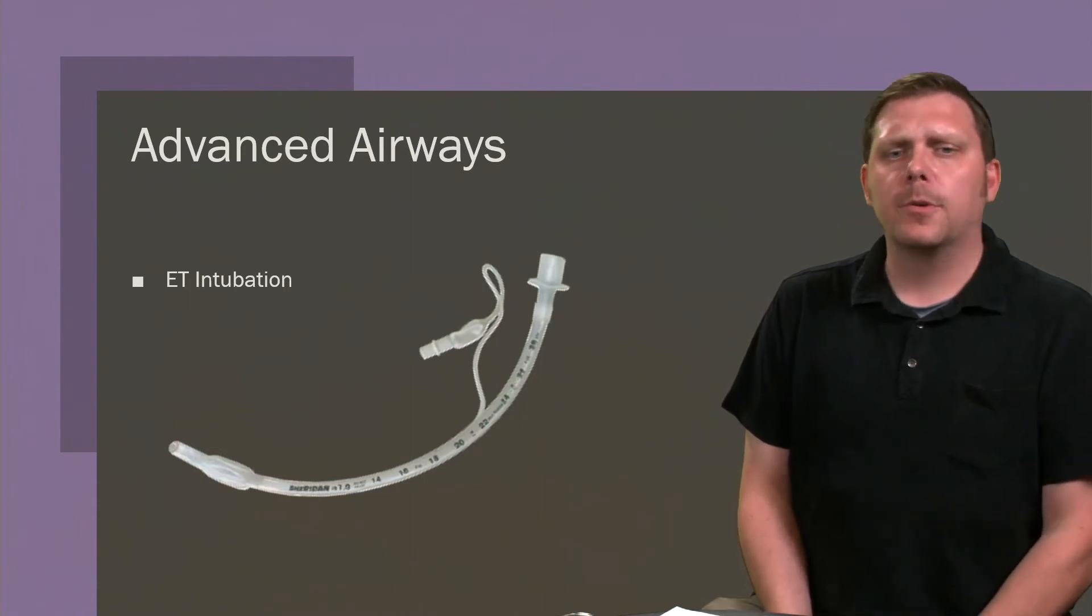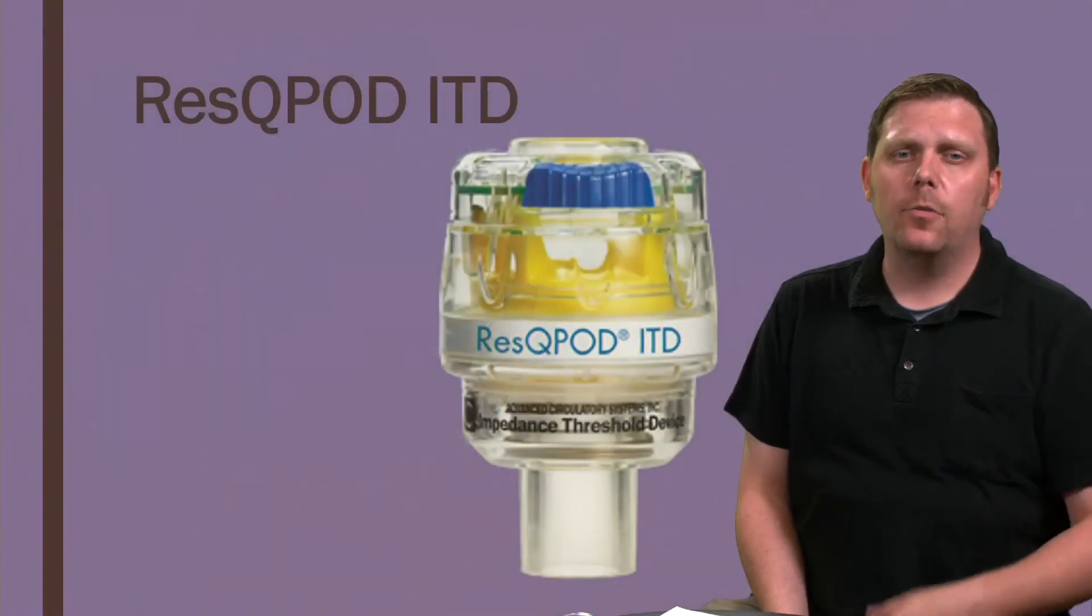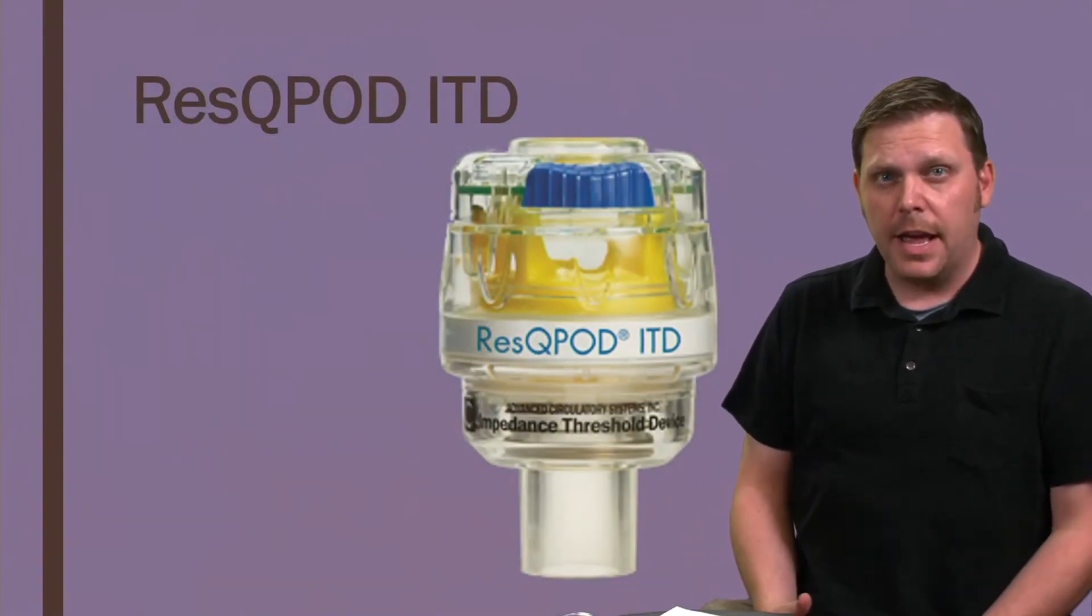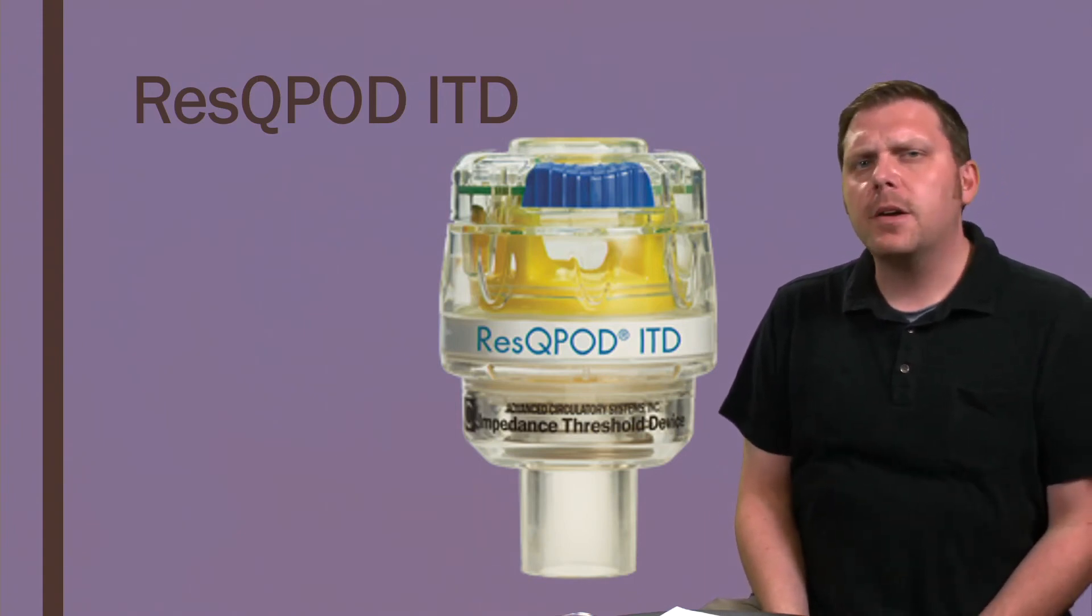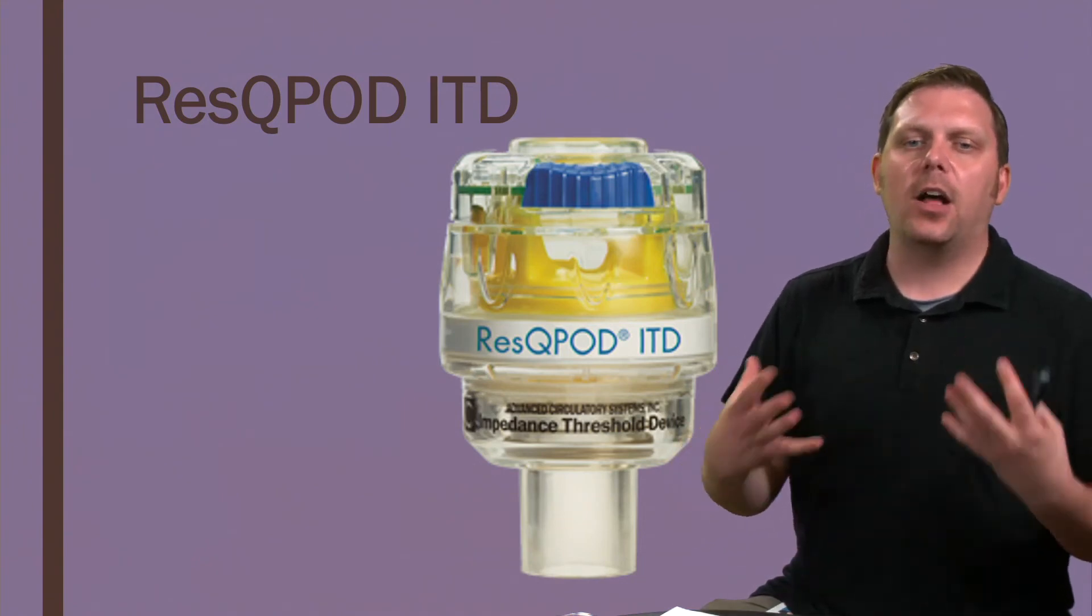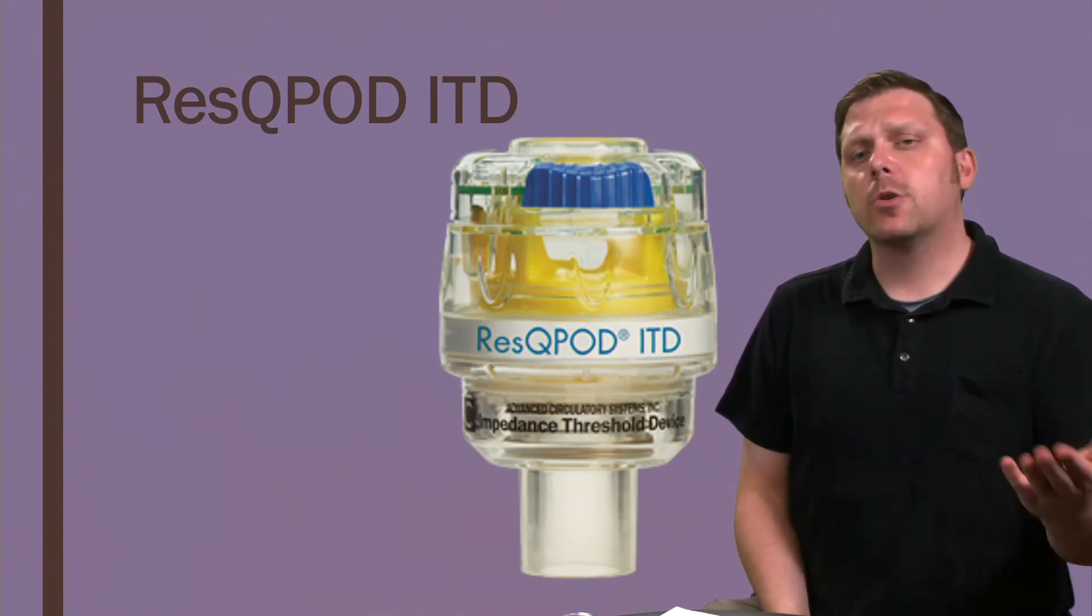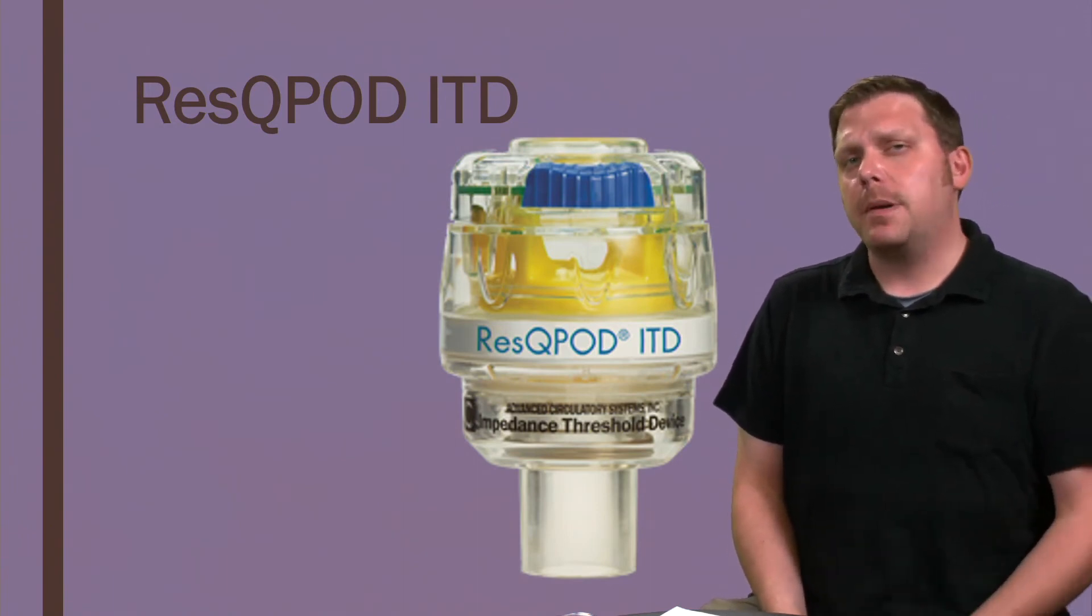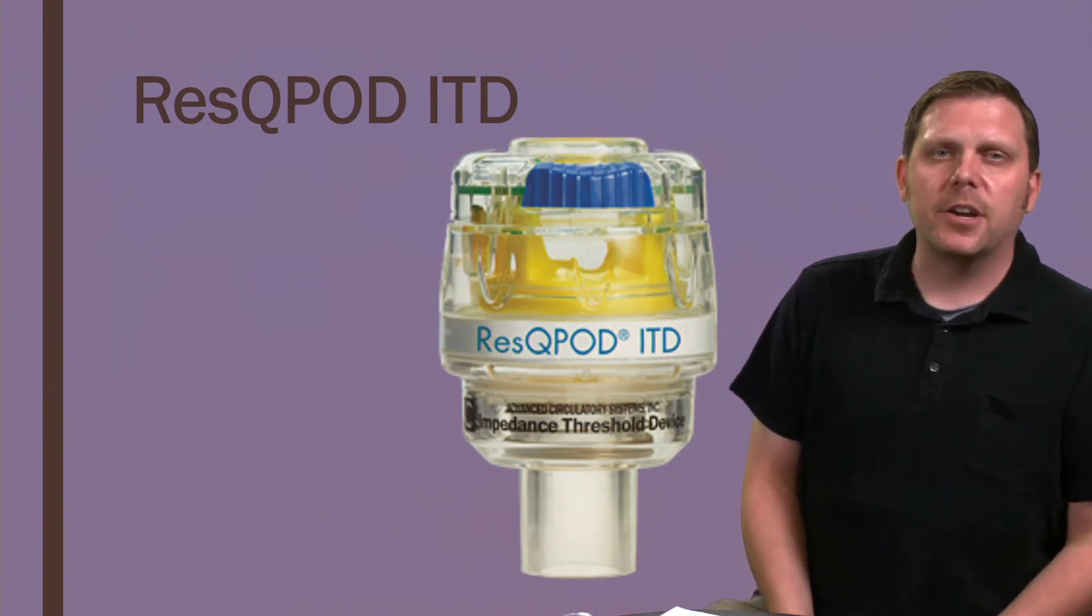When we have an airway, we're presumably bagging for our patient. If they're in cardiac arrest, we need to make sure that we're doing the best we can for our patient and really making sure that we get preload to the heart. And so something we add to the airway section actually helps with preload and cardiac output during CPR, which is the ResQPOD. This is an impedance threshold device. It's currently the only impedance threshold device on the market. And we apply this anytime a patient's in cardiac arrest.